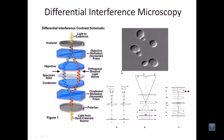Let us talk about different types of microscopy — specifically differential interference microscopy, better known as DIC. What is a differential interference microscope and why do we use this microscopy over normal light microscopy? This is a type of light microscopy because we are using common light to illuminate our sample, so it is a basic modification of normal light microscopy.